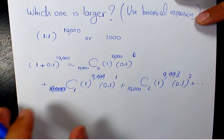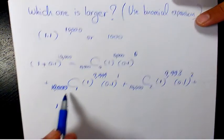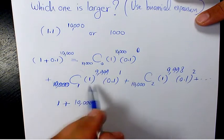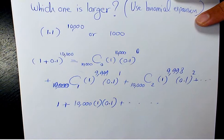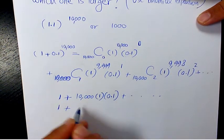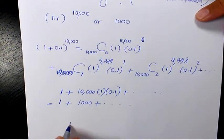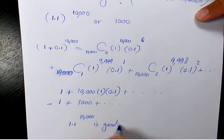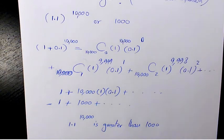So it just adds up. The first term is going to be 1. The second term: C(10000, 1) is 10,000; 1^9999 is 1; 0.1^1 is 0.1 — so that gives 10,000 × 0.1 = 1,000. Plus some other numbers. So it's already greater than 1,000. Therefore, 1.1 to the power of 10,000 is greater than 1,000,000. That's how we figure it out.